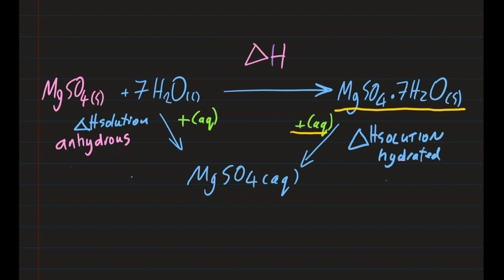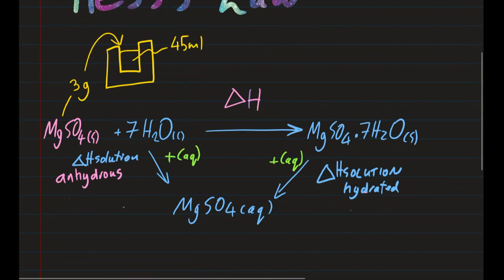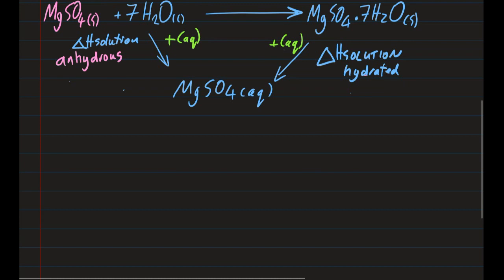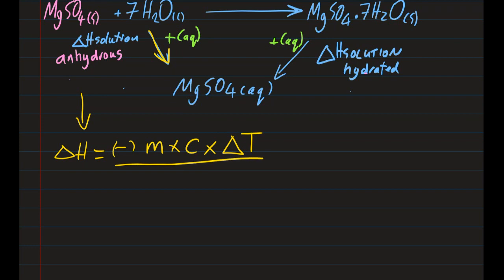In the experiment, I took three grams of anhydrous magnesium sulfate and put it in an insulated container with 45 milliliters of water. Delta H for that reaction is going to be negative: the mass of what's heated — the three grams plus 45 grams of water — times the specific heat capacity, which we assume is 4.18.